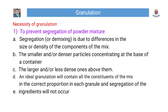Necessity of granulation: to prevent segregation of powder mixture. Segregation is the demixing of powders, caused by differences in the size or density of the components of the mix. Smaller and/or denser particles concentrate at the base of a container, while larger and/or less dense powders remain above them. An ideal granulation will contain all the constituents of the mixture in the correct proportion in each granule, so segregation of ingredients will not occur.